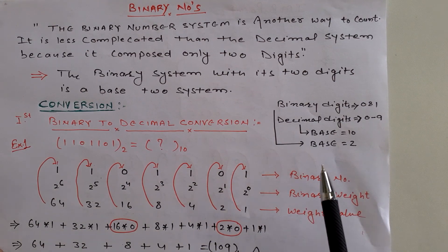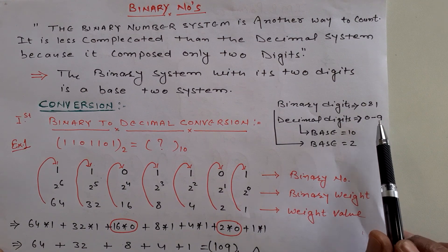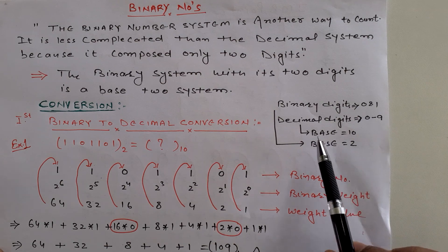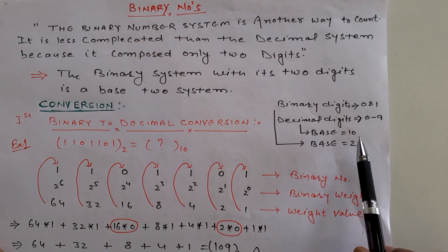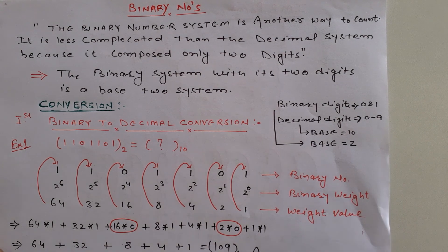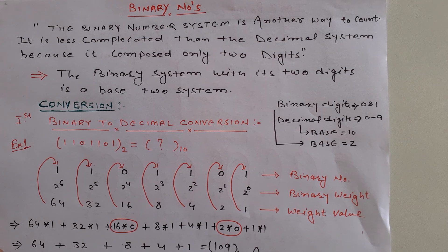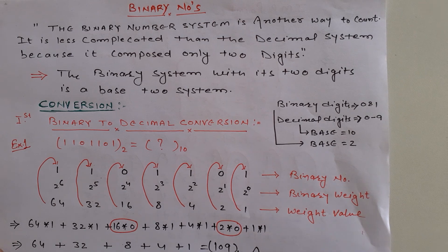Decimal consists of zero to nine — ten digits — that's why the base of the decimal number system is ten. If we form any number using two digits, it will be binary. If we form a number using ten digits, it will be decimal — a little more complicated. So binary number system is simpler in comparison to the decimal.